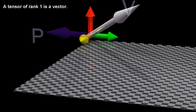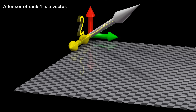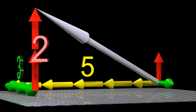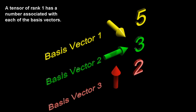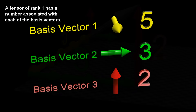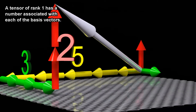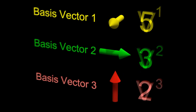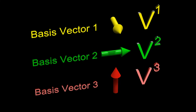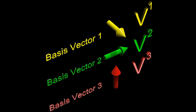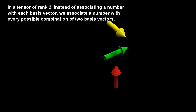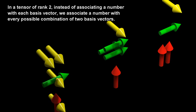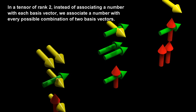A tensor of rank 1 is a vector. A tensor of rank 1 has a number associated with each of the basis vectors. In a tensor of rank 2, instead of associating a number with each basis vector, we associate a number with every possible combination of two basis vectors.